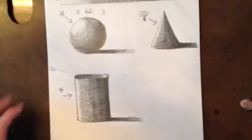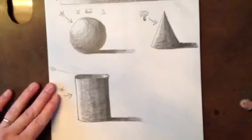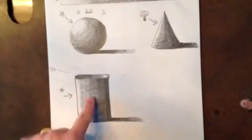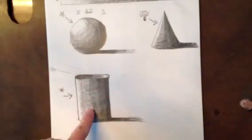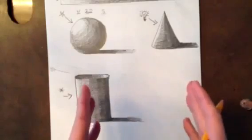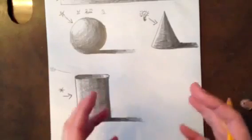The last form we're going to work on is a cube. If you remember, I mentioned that these rounded forms are treated differently than the cube because the cube has angles. It doesn't have any rounded edges.